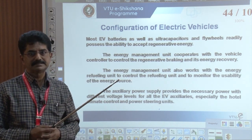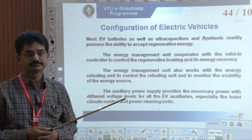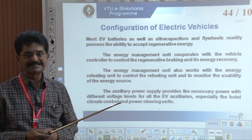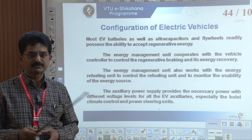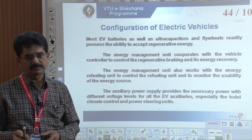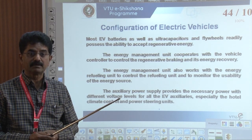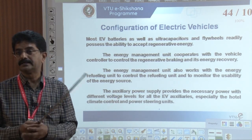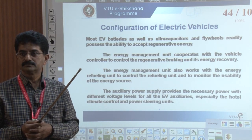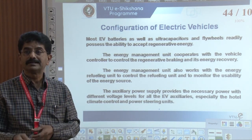Most EV batteries, as well as ultra-capacitors and flywheels, readily possess the ability to accept regenerative energy. The energy management unit cooperates with the vehicle controller to control regenerative braking and its energy recovery. The energy management unit also works with the refilling unit to monitor the usability of energy sources. The auxiliary power supply provides necessary power at different voltage levels — for example, the motor may require 48 volts, while tail lamps and horn require 12 volts.